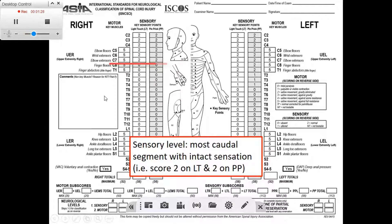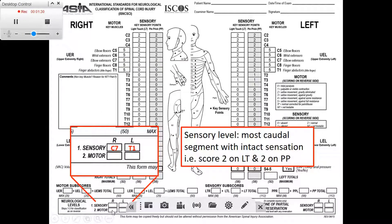Let's do the same thing for the left side. We can see that we have 2, 2 until T1. At T2, the patient has normal light touch but impaired pin prick, so the sensory level is not T2 — because the sensory level should have intact sensation for both modalities. That's why on the left side the sensory level would be T1.